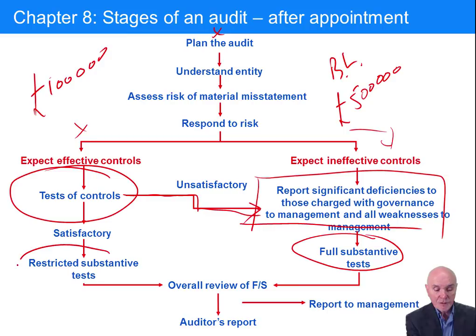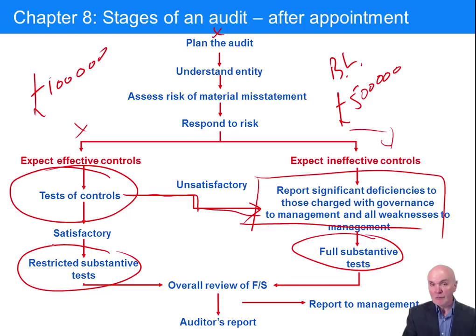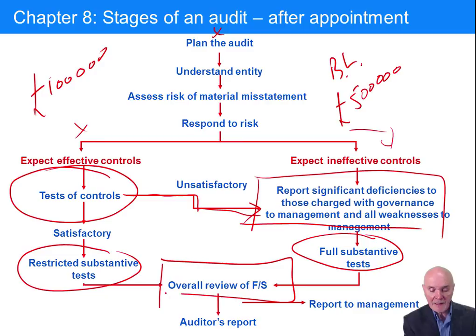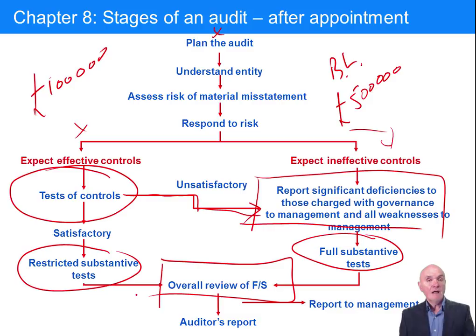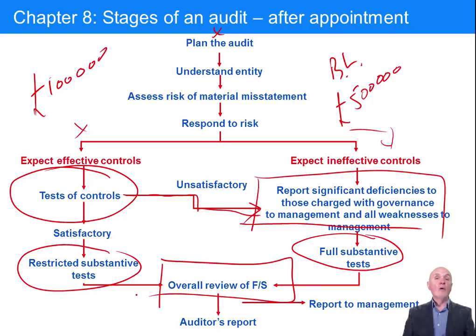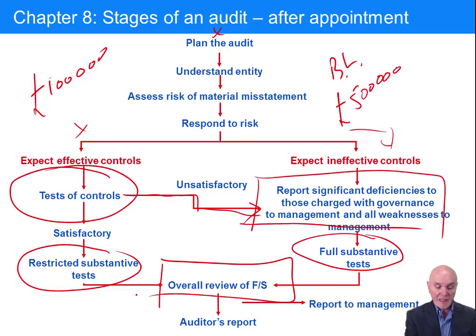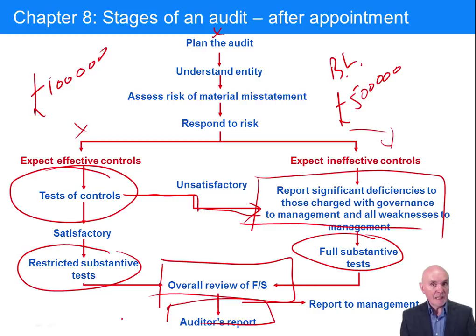Even where there are good internal controls, you nevertheless do some restrictive substantive tests — some direct testing of receivables, inventory, payables and so on. One way or the other, we hope to have collected sufficient information that there is reasonable assurance of no material misstatements in the financial statements. Then comes the final step: the auditor's report, whether it's a clean unmodified report, or a qualified one — except for, disclaimer, or adverse opinion.